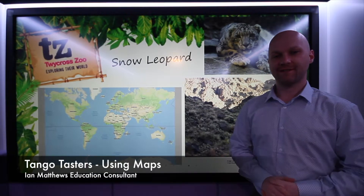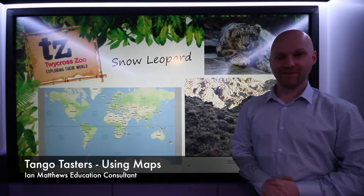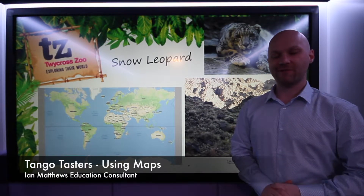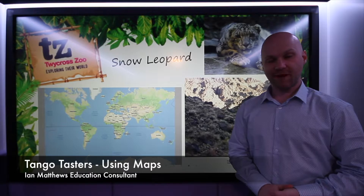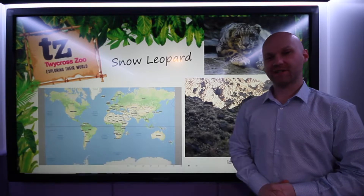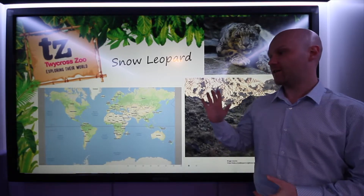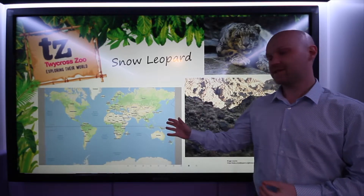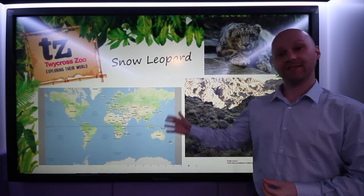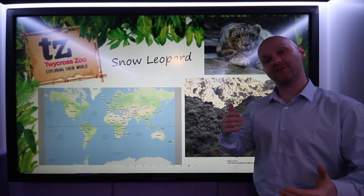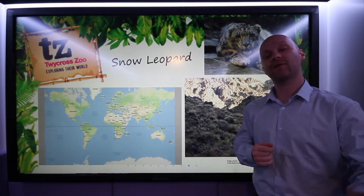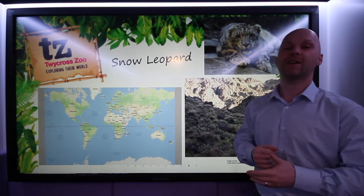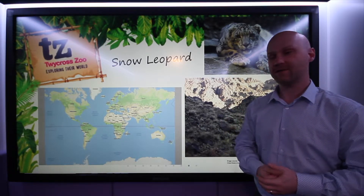Welcome to Tango Tasters. I'm Ian Matthews and today we're going to be revisiting maps. We've looked at maps already to some extent in the session we did on Mexico, using it to look between the Aztec era and the present-day era via transparencies.